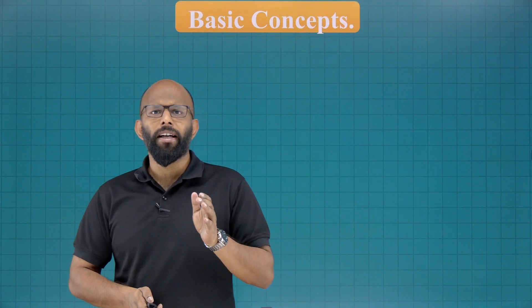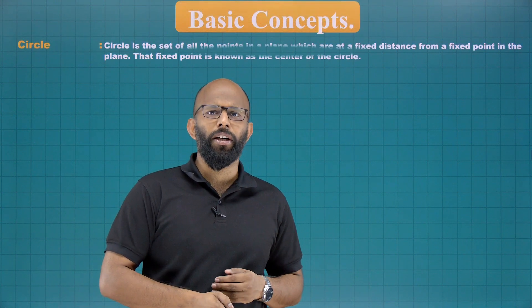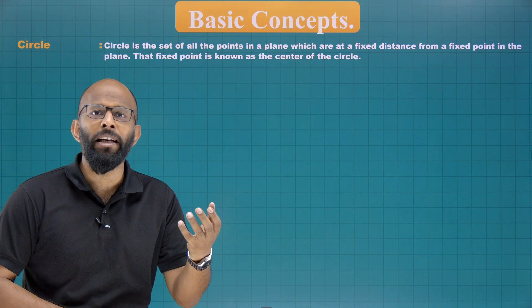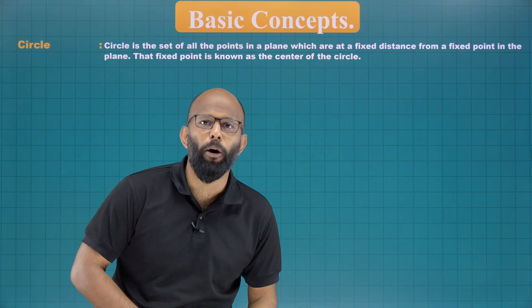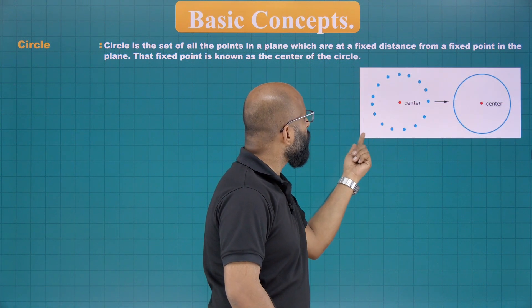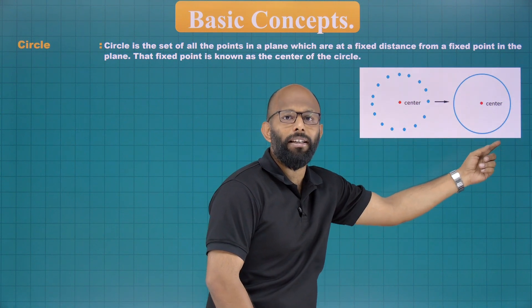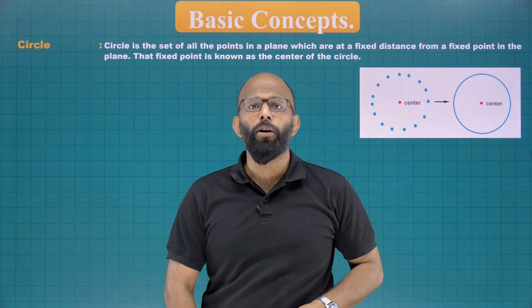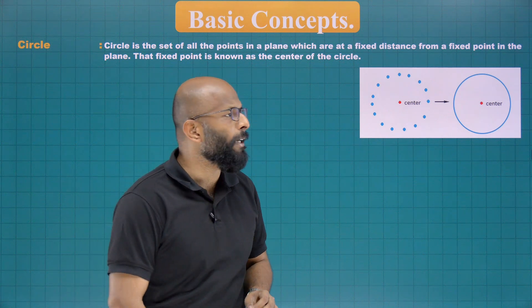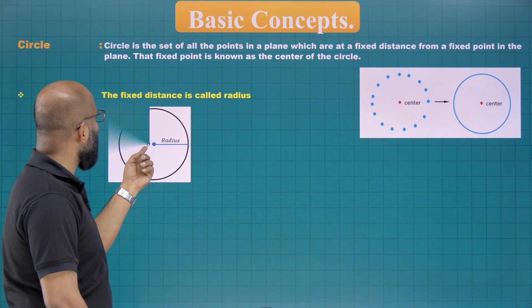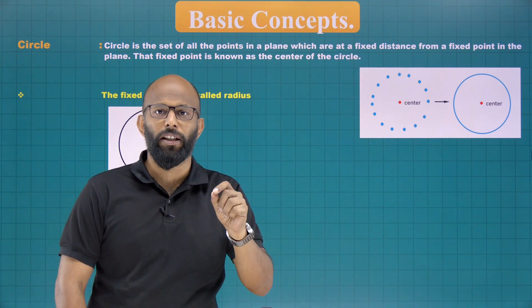Before starting the theorems, let's go to the basics. First of all, what is the definition of a circle? A circle is a collection of all points in a plane which are equidistant from a fixed point. If you join all those points you get the circle. That fixed point is called the center, and that fixed distance is called the radius of the circle.